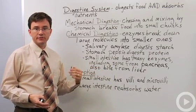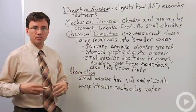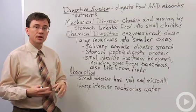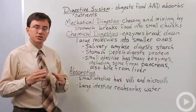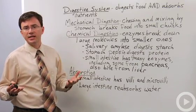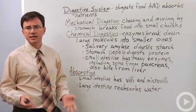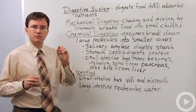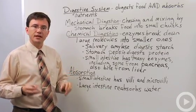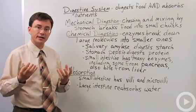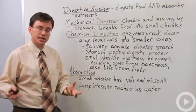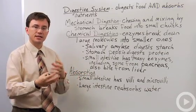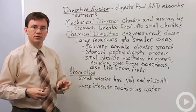Bile is produced by your liver and stored in your gallbladder. Bile is not an enzyme, but what it does is a process called emulsification of fats. That takes big chunks of fat and breaks them into small globules, making it easier for fat-digesting enzymes like lipase to attack the globs of fat.